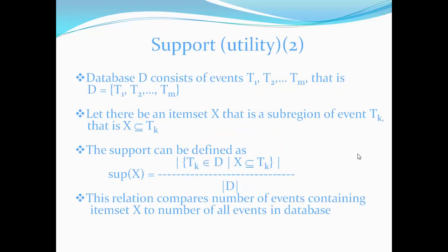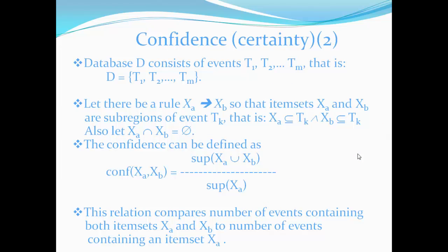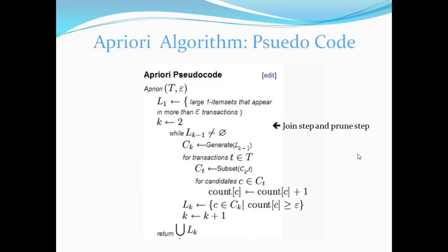Frequent item set, support, support and its formula which is to be implemented. Confidence and its formula. Apriori algorithm as a pseudo code. In apriori algorithm as a pseudo code, initially we take the data as transactions and also the data required for the transactions to be implemented.